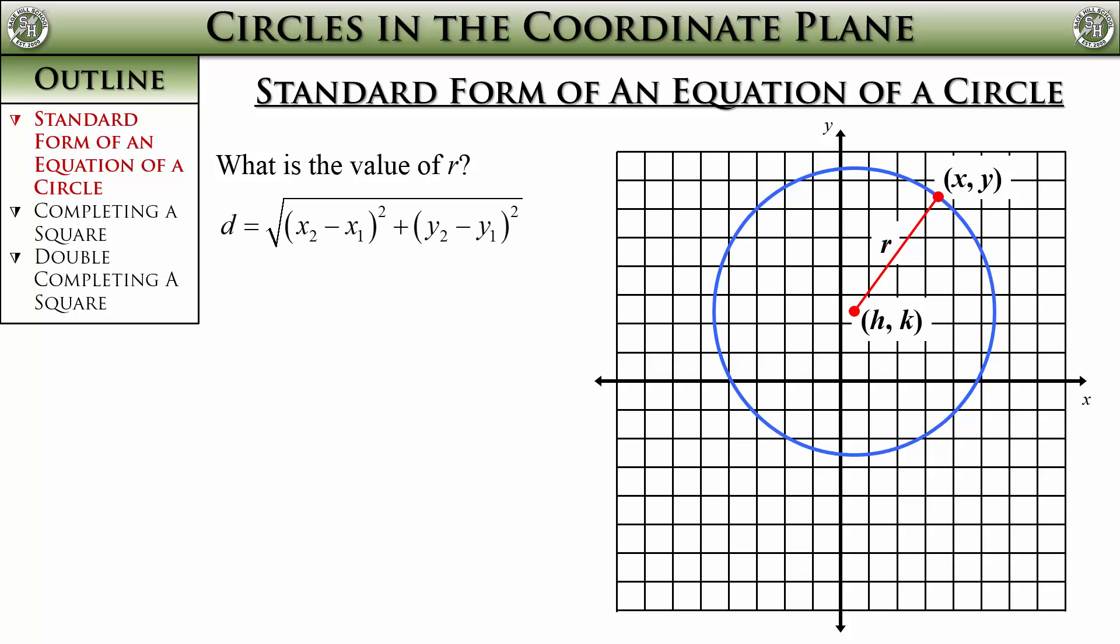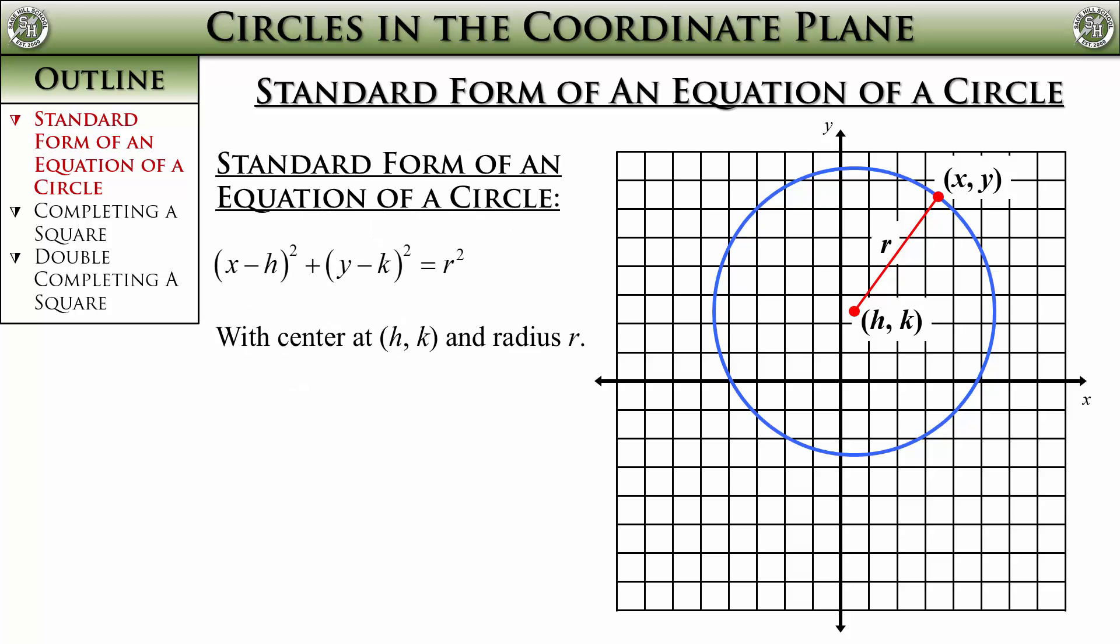Now let's plug in the h and the k and the r into the distance formula to make it look like this. Then we square both sides, transforming the equation into this. There it is. This is the standard form for an equation of a circle.